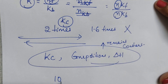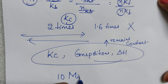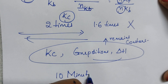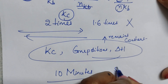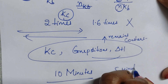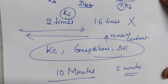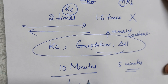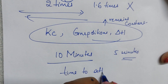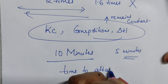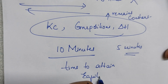What does change when you add a catalyst is the time taken to reach equilibrium. For example, without a catalyst it takes 10 minutes; with a catalyst it takes just 5 minutes. So the time to attain equilibrium is reduced.